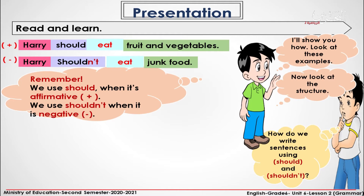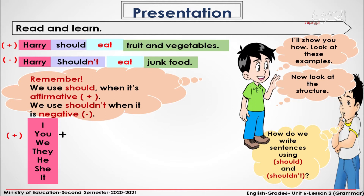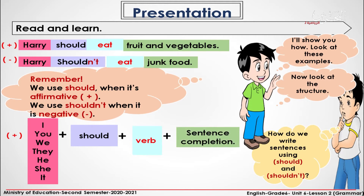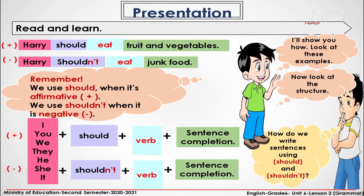Now, look at the structure. I, you, we, they, he, she, it — should plus the verb plus the sentence completion. I, you, we, they, he, she, it — shouldn't plus the verb plus the sentence completion.